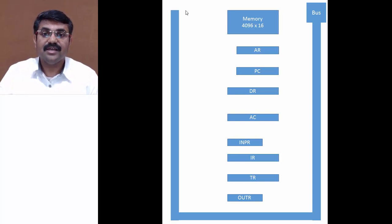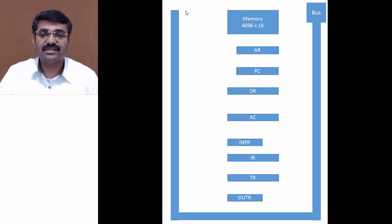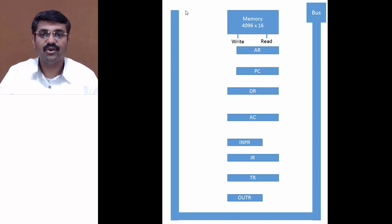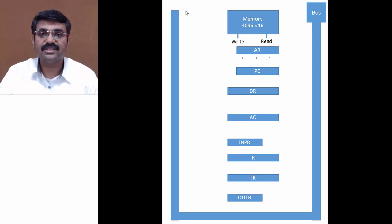Before moving to that arrangement, all these memory and registers are given certain signals. Starting with memory — memory will have two signals: read and write. Because in memory we can perform only two operations: either we can read from memory or we can write to the memory. Then AR, PC, DR, and AC — all four registers — will have three signals: load, increment, and clear.